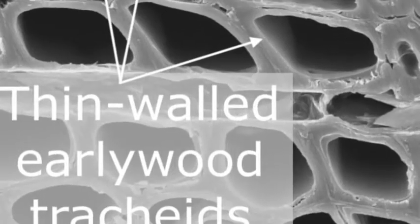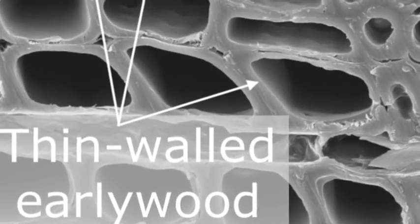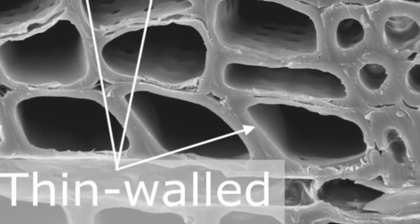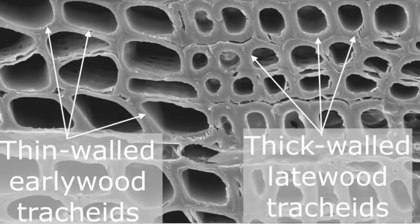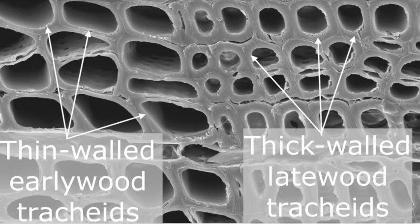Later in the growing season though, less water is needed and the tree produces thicker cell-walled tracheids. These thick-walled tracheids appear to the eye as darker colored bands known as the late wood. These thicker-walled cells also provide greater strength. A single growth ring consists of a combined early wood and late wood band.